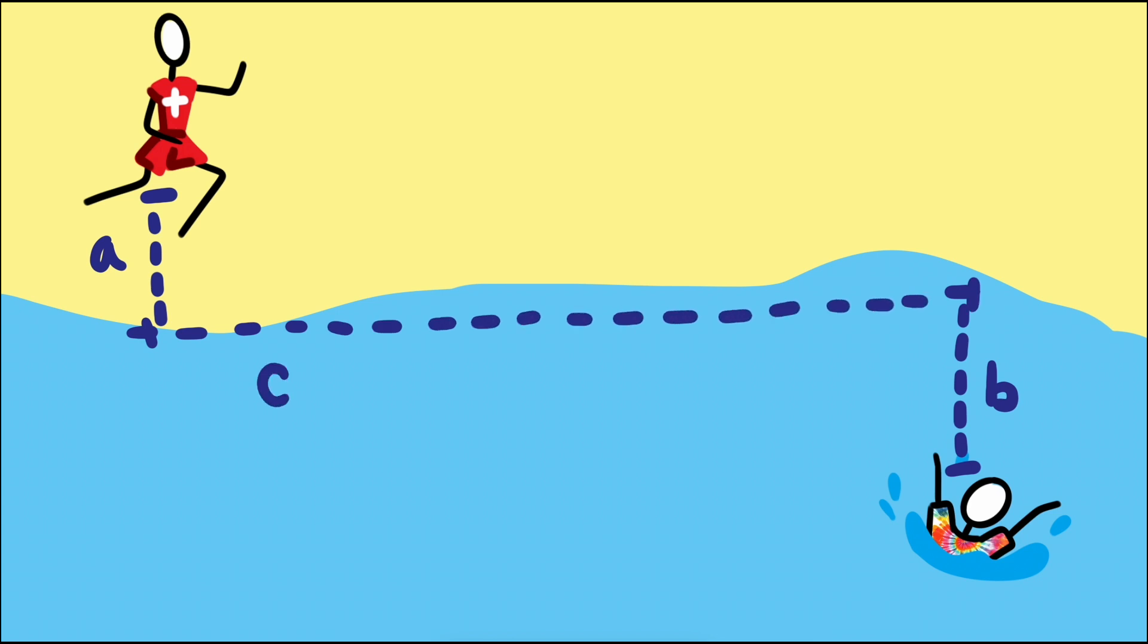If we call the missing location of how far down the shore the lifeguard should run X, then this distance here can be written C minus X. The hypotenuses of these right triangles represent the path the lifeguard would take.